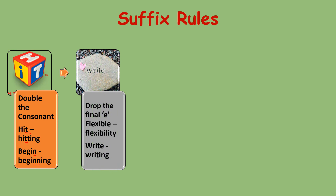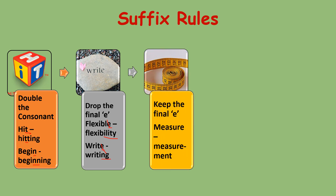Drop the final 'e': when you have words like 'flexible' and 'right', the final 'e' is dropped when adding suffixes like '-ility' or '-ing'. However, keep the final 'e' in some words — for example, just add the suffix '-ment' directly, so 'measure' becomes 'measurement'.